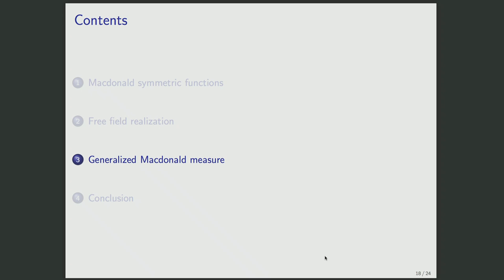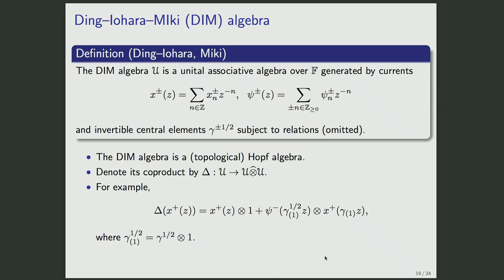In the remaining slides, I show some direction towards a generalization of Macdonald measures. The central ingredient is the Ding-Iohara-Miki algebra — a unital associative algebra generated by four currents x+, x-, psi+, psi-, and an invertible central element gamma^{1/2}, subject to some relations. Importantly, the Ding-Iohara-Miki algebra is a Hopf algebra equipped with a coproduct delta; for example, the image of x+ under the coproduct is given by a specific formula.